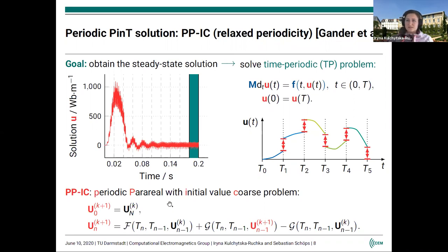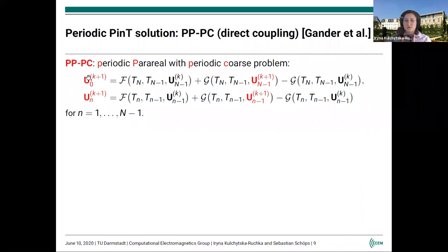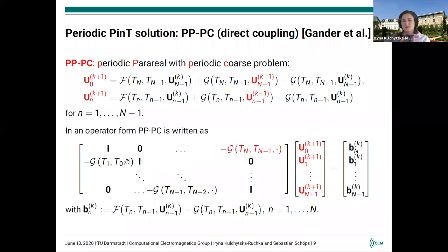Now, what can we do to have a more direct periodicity? There was another method also in the same paper proposed by Martin, called PBPC, which stands for periodic boundary problem with periodic coarse. In fact, you see here the initial condition is directly coupled with the final value at the end of the interval through the coarse propagator. If I write it in the operator form it looks like this, with this time periodic structure. This coupling is now explicitly visible between u₀ and u_{n-1} from the coarse solver.